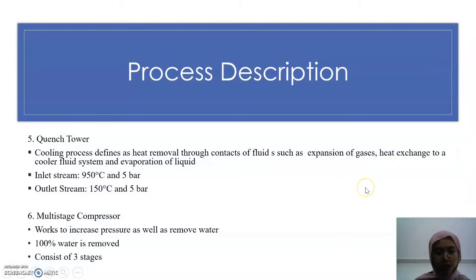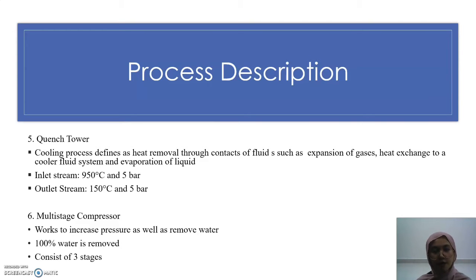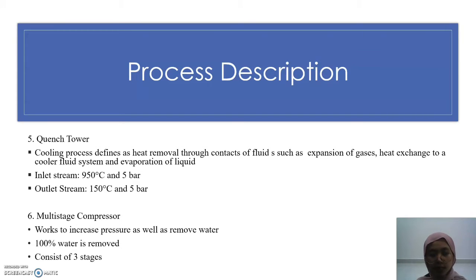Next, we have the quench tower, which is basically a cooling process. There is heat removal through contact such as expansion of gas, heat exchanged to a cooler system, and evaporation of liquid. The inlet temperature and pressure of the quench tower is 950 degrees Celsius and 5 bar. The outlet stream temperature is 150 degrees Celsius at 5 bar. Next, we have a multi-stage compressor that works to increase pressure and remove water. It removes 100% of water and consists of 3 stages.